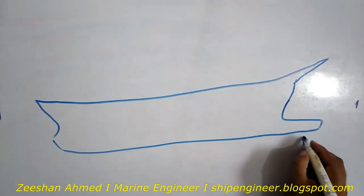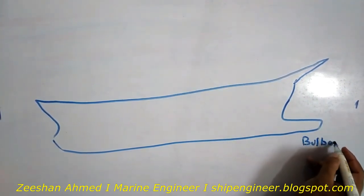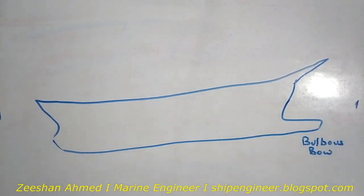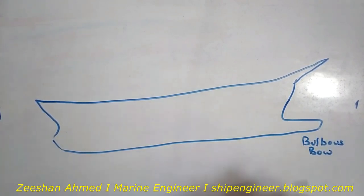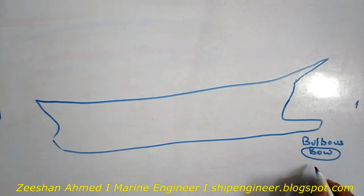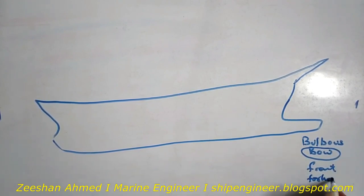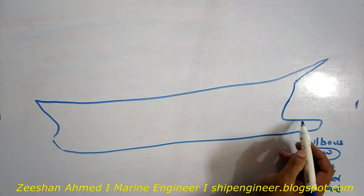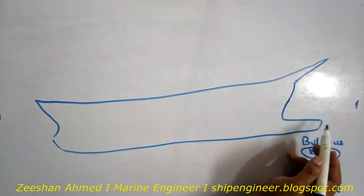This is the bulbous bow. Bow is also known as the front, forehead, and forward — three terms are used — and this is in the form of a bulb, a spherical shape. That's why it's called bulbous.